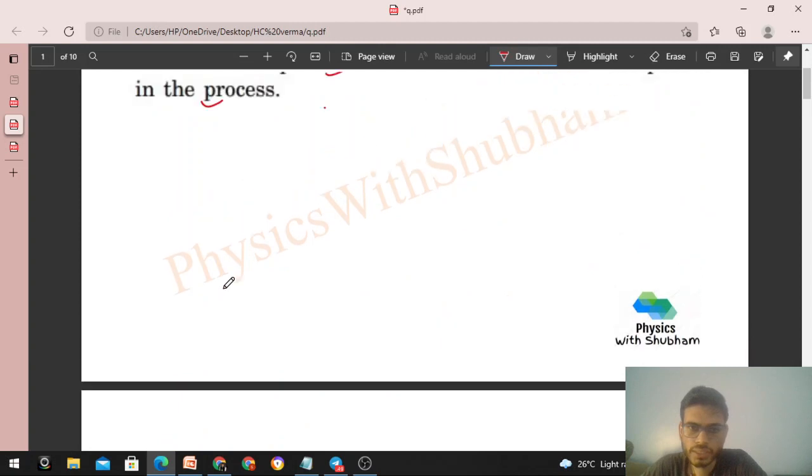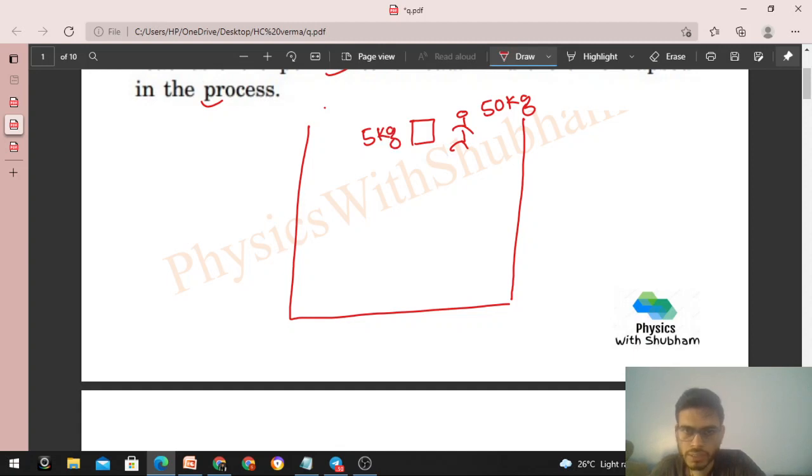So we have a gravity-free hall in which an experimenter has a pillow. Mass of the experimenter is 50 kg and mass of the pillow is 5 kg. Now what happens is that this experimenter pushes the pillow in the downward direction so that the pillow started moving in the downward direction with a speed of 8 feet per second. So when this pillow is pushed downwards, the man will move upward. Let's assume with some velocity Vm.